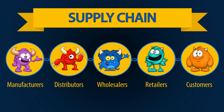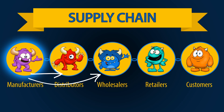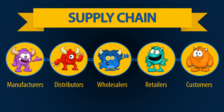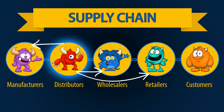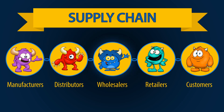First come the manufacturers — they are the companies manufacturing or making the products themselves. They're usually very large companies and only sell to distributors or wholesalers in order to sell their products. Next are the distributors; they will usually enter into contracts with the manufacturers and are involved with selling to various businesses and customers throughout the entire market.